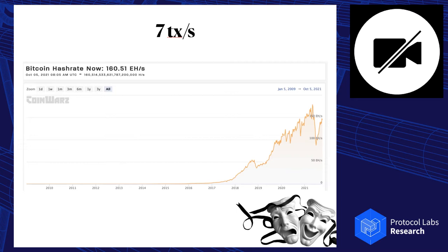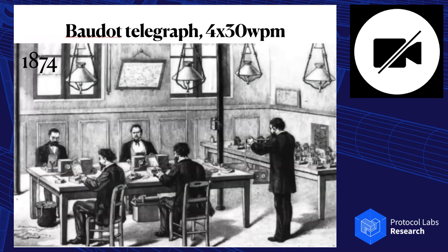At the same time, it produces, it makes like seven transactions a second. So I will put that into comparison. This is like the earliest telegraph, electromechanical telegraphs, which was actually popular. It is the Baudot system. It is like 30 words per minute per operator, four operators per machine. So it is like two words per second. So it was slightly slower than Bitcoin.